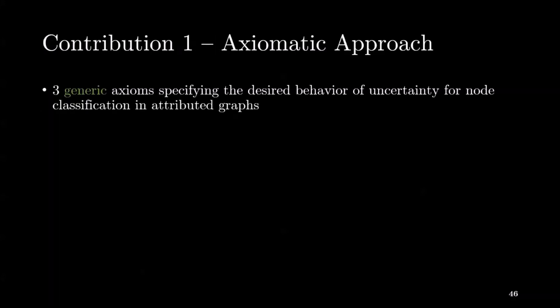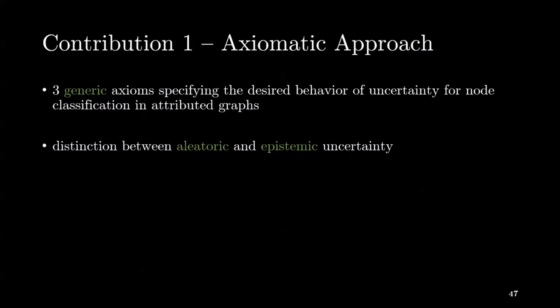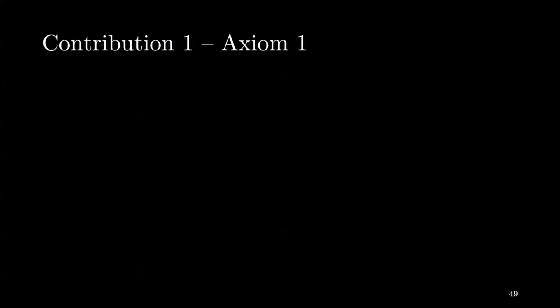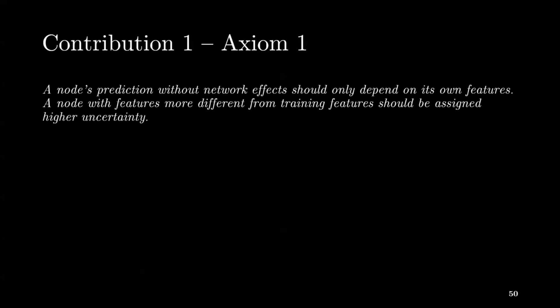For the first contribution, we proposed three generic axioms to define the desired behavior for uncertainty estimation for node classification. They are based on the distinction between aleatoric and epistemic uncertainty, and the distinction between uncertainty without and with network effects. They are generic so that their application is independent and model agnostic. In practice, we instantiate them with specific formal definitions of concepts like aleatoric and epistemic uncertainty. Our first axiom describes the desired behavior for aleatoric and epistemic uncertainty without network effects. It says a node prediction without network effects should only depend on its own features.